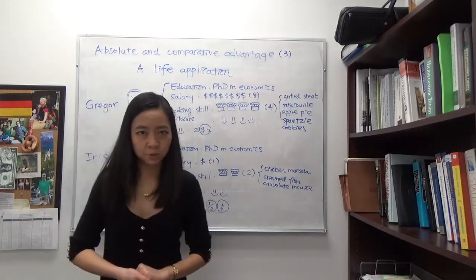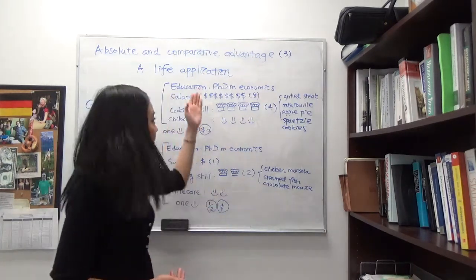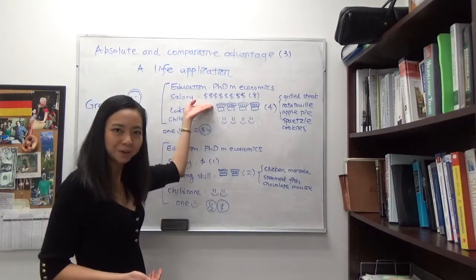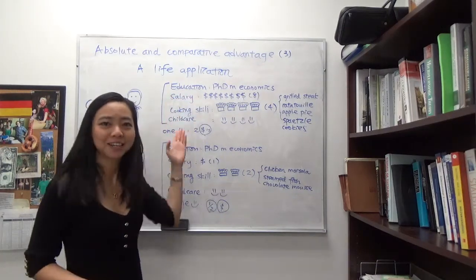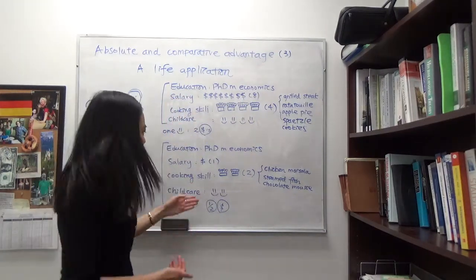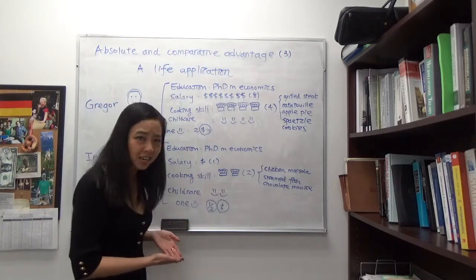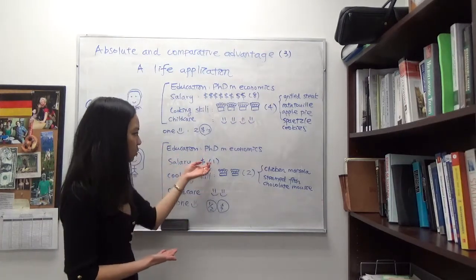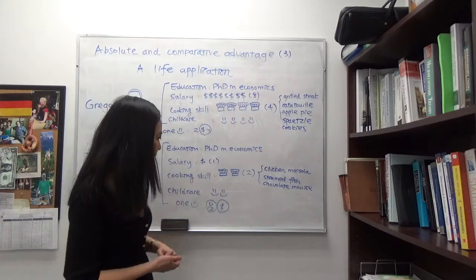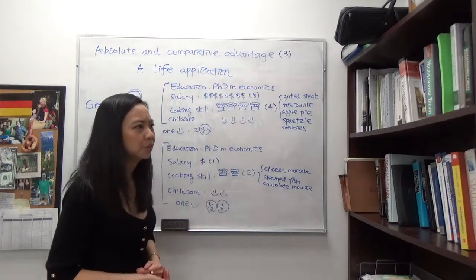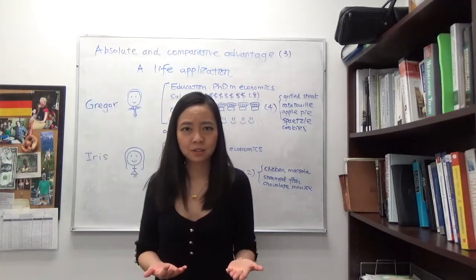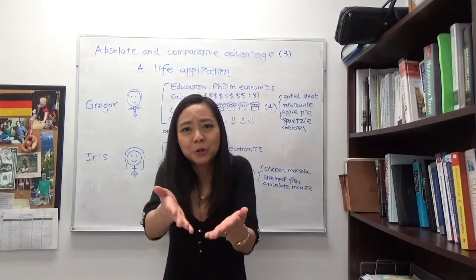Now you can see that Gregor has an absolute advantage in everything: salary, cooking skill, and childcare. Iris has an absolute disadvantage in everything—only one dollar sign, two chef hats, and two smiley faces. Does it mean that Iris is useless? I hope you don't say that because that will make me sad. The real reason is that Iris has a comparative advantage in childcare and cooking. Let's see how it works.